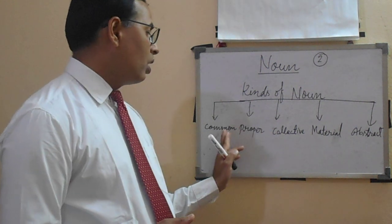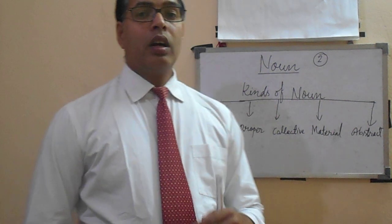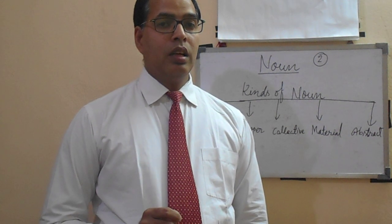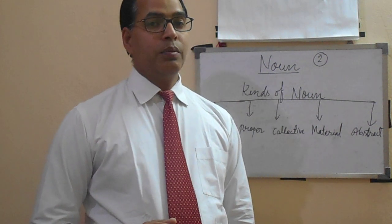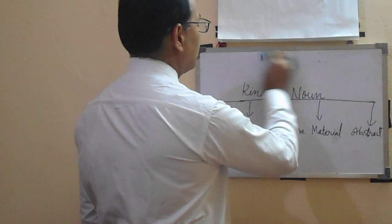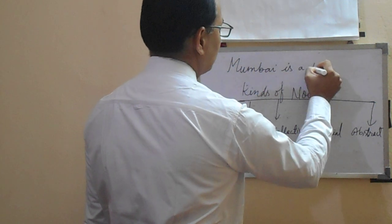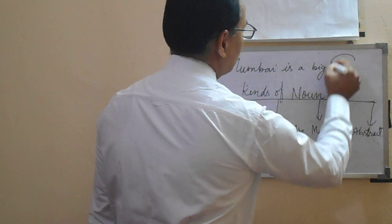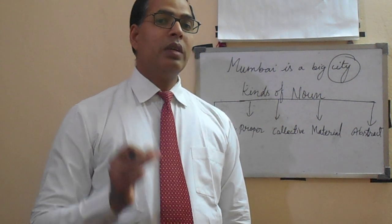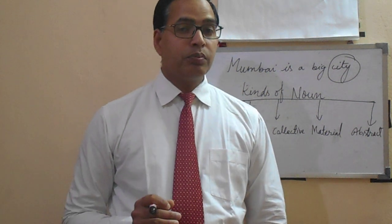Definition with example — common noun. Common noun is the name of a common person, place, or things. Just like: Mumbai is a big city. In that sentence, 'city' is the common noun, because there are so many cities and so many names of cities. That is why 'city' in the sentence is a common noun.